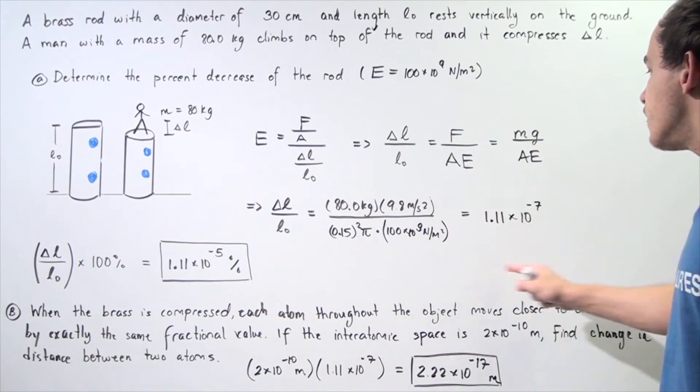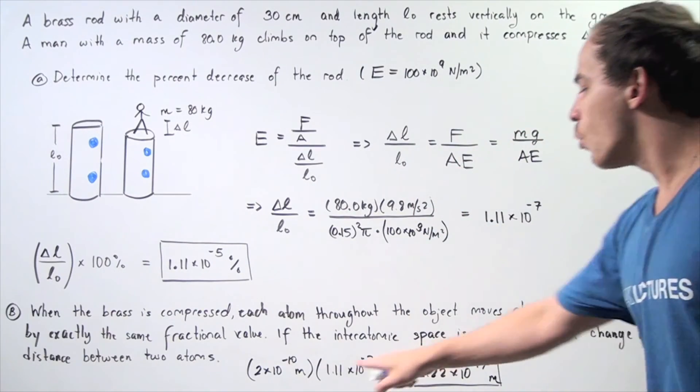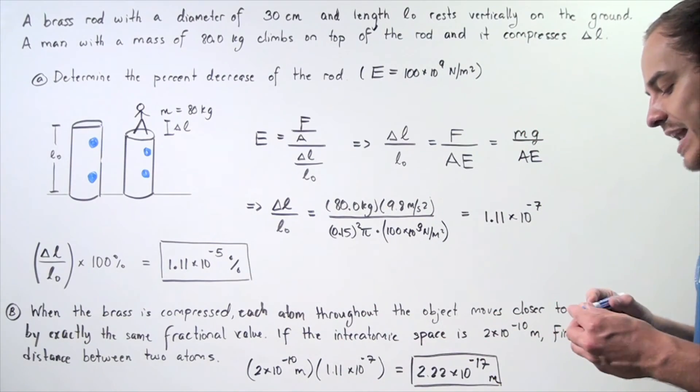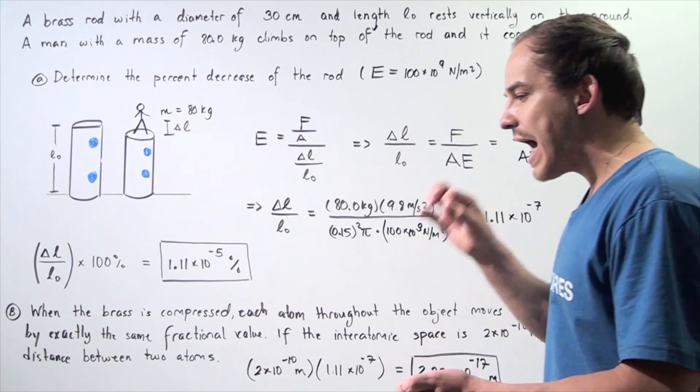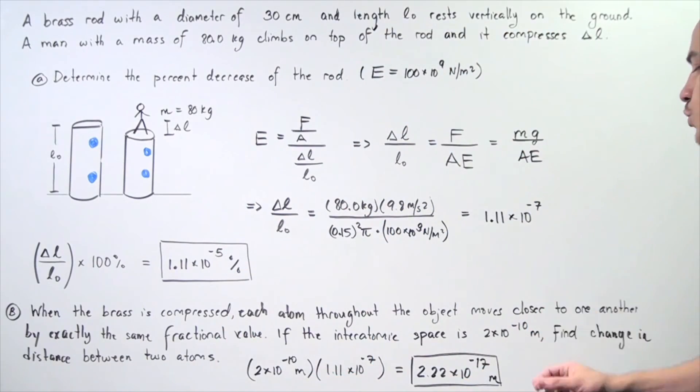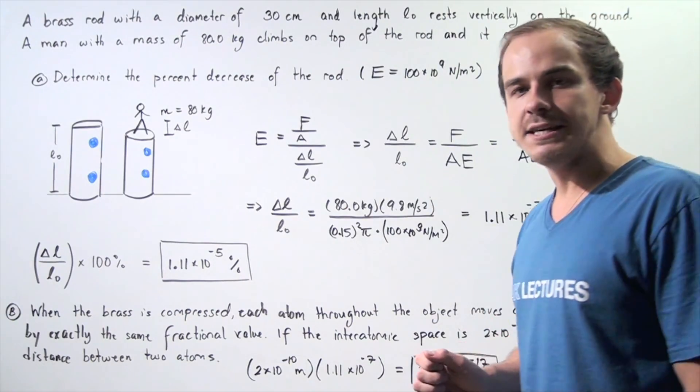and we multiply by the fractional decrease, 1.11 times 10 to the negative 7, and we see that our two atoms got closer by this distance, 2.22 times 10 to the negative 17 meters.